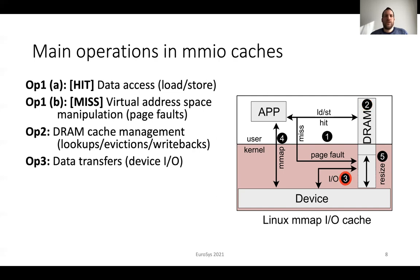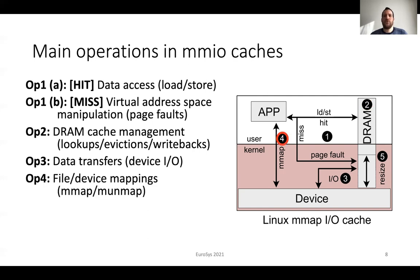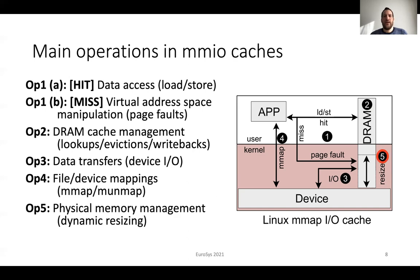The third operation includes data transfers between the device and DRAM. The fourth operation is a management operation. In memory mapped IO, it includes file or device mappings that are handled by mmap and munmap system calls. The last operation is physical memory management, which also includes the dynamic resizing of the DRAM cache. In Linux, all of these operations happen inside the operating system and require a protection domain switch from user to kernel space.